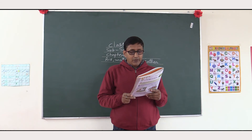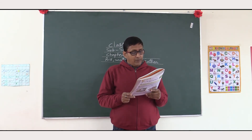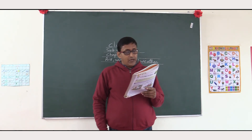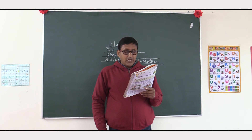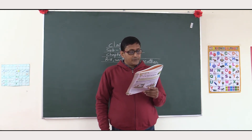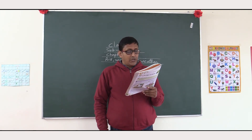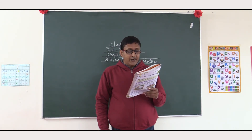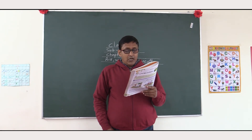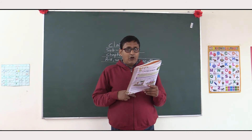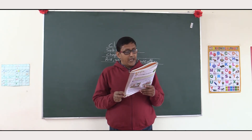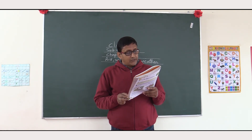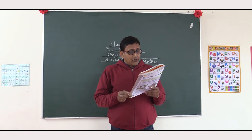When air moves, it is called wind. Strong wind is called a gale. Wind that blows gently and lightly is called a breeze. Very strong wind is called a storm. When a storm occurs with lightning and thunder, it is called a thunderstorm. Wind also decides the weather of a place.